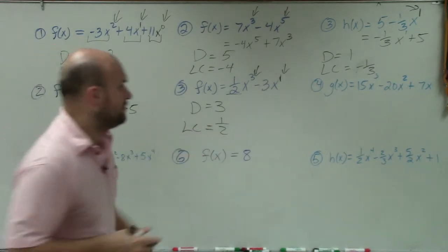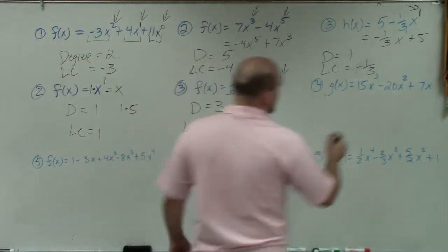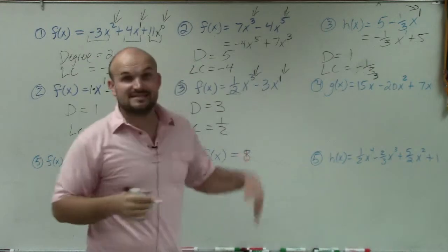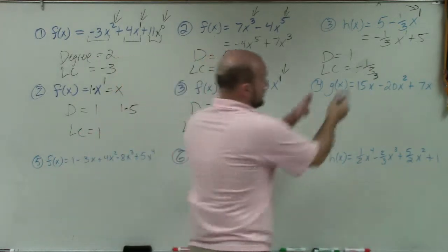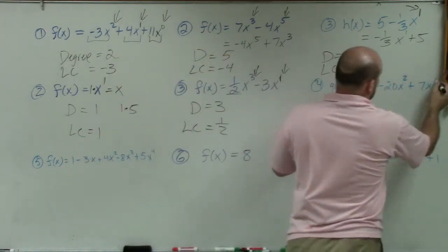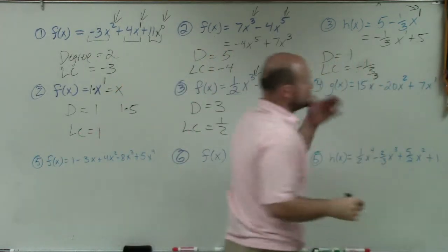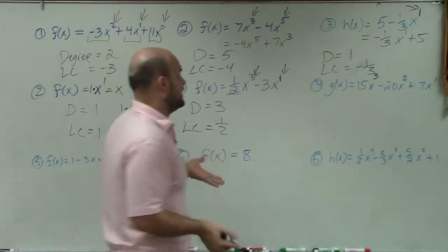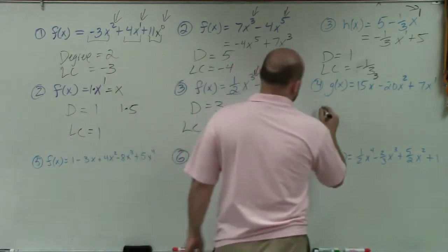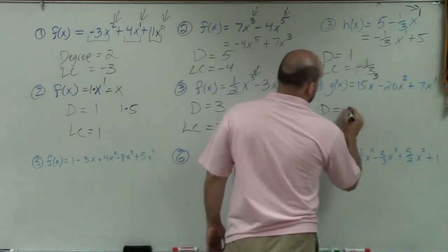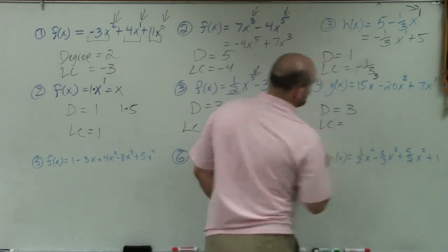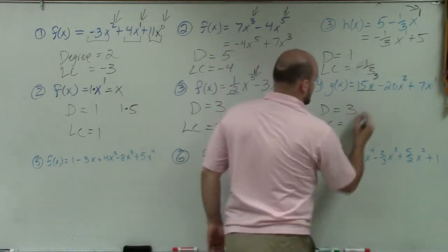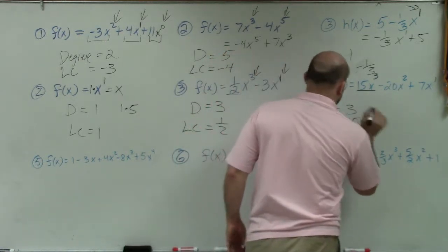For example number 4, that is a 3. You can see that is in descending order: 3, 2, 1 — there's no other exponent with another power. So I know that my degree is going to be 3, and my leading coefficient is the coefficient of that exponent, which is 15.